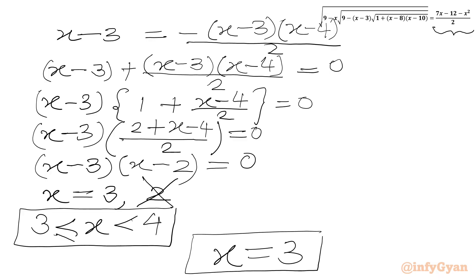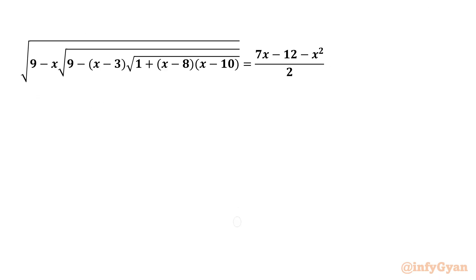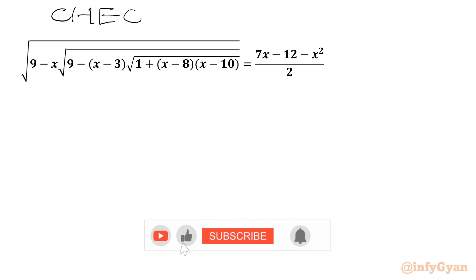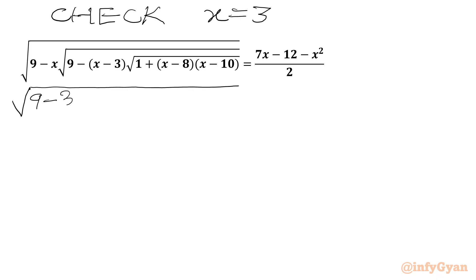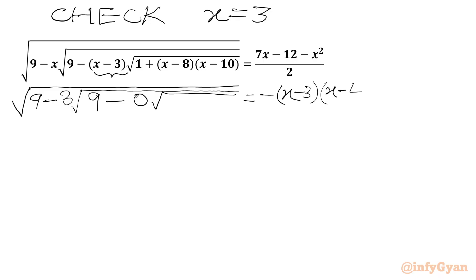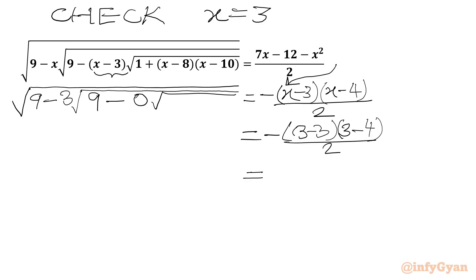Now we are going to check and verify our solution — whether it is satisfying our equation or not. Check x equals 3. Let's put x equals 3. So I can write the LHS side as 9 minus 3 times square root of 9 minus — this bracket will give us 0, so no need to write after that square root because that product will give us 0 flat. If I write the RHS, it was minus of x minus 3 times x minus 4 over 2. Once we plug in x equals 3, we get minus of 3 minus 3, which is 0, times 3 minus 4 over 2. So we can write directly 0 times 3 minus 4 over 2. So our RHS is 0.